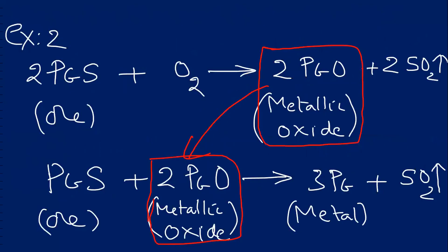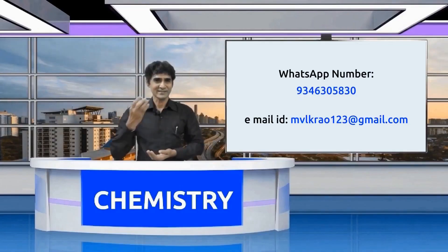See the second example? Same. PbS changes into PbO. How to convert into Pb? Same. The ore itself reduces the PbO, metallic oxide, into Pb. Let us meet in the next class.